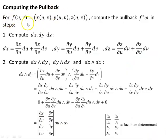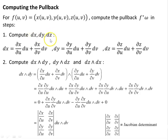Computing the pullback: for the parameterized surface F(u,v) = (x(u,v), y(u,v), z(u,v)), we compute the pullback F* omega in steps. Step one: compute dx, dy, dz. By the chain rule, dx equals (∂x/∂u) du + (∂x/∂v) dv; dy likewise; and dz likewise.